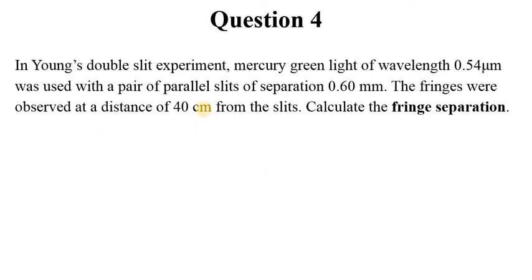Question 4. In Young's double slit experiment, mercury green light of wavelength 0.54 micrometers was used with a pair of parallel slits of separation 0.60 millimeters. The fringes were observed at a distance of 40 centimeters from the slits. Calculate the fringe separation.